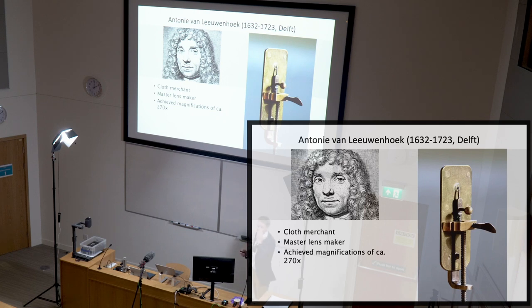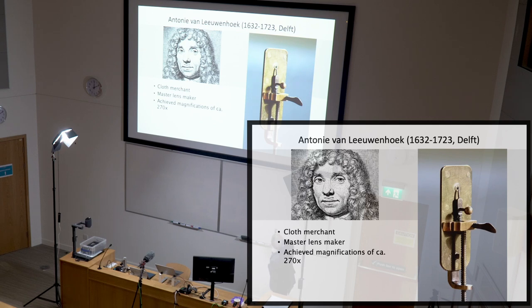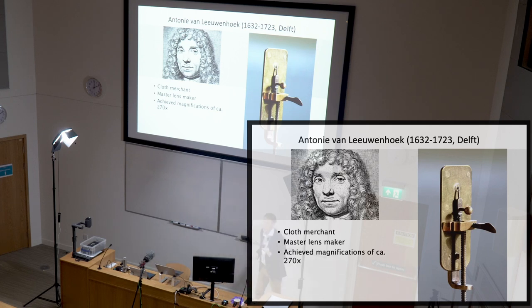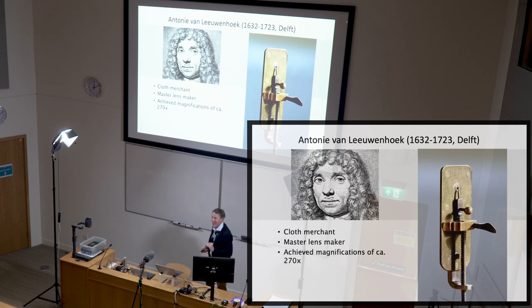The way it works is you look through the back of the brass plate through the little hole with the lens, hold it against the sun, and place the sample on a little pin. A screw mechanism allows you to change the distance of the object to the lens. It's fiendishly difficult to use — I've tried it myself at the Whipple Museum of Science where there's a replica — but with these instruments many, many discoveries were made.